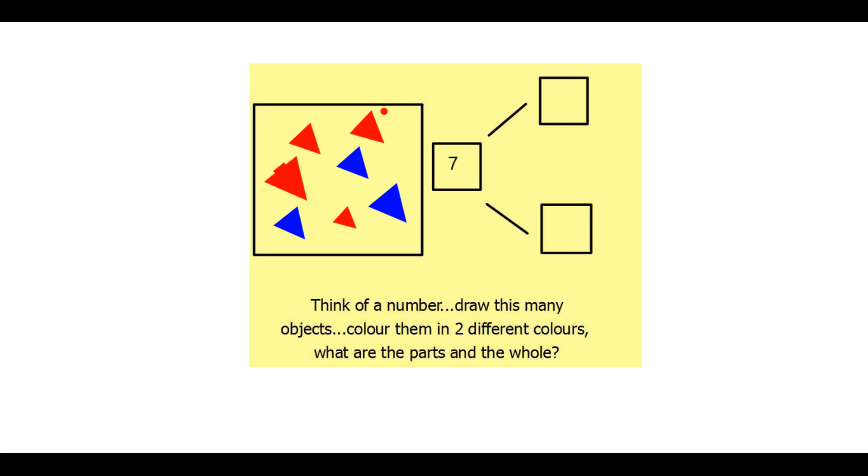So I have one, two, three, four red triangles. So four is one of my parts there. And I also have three blue triangles. That's going to be my other part.